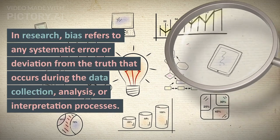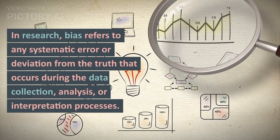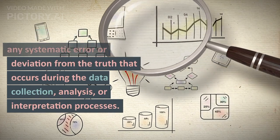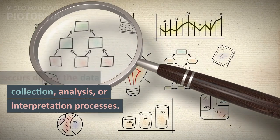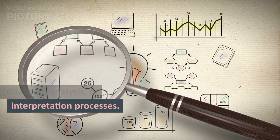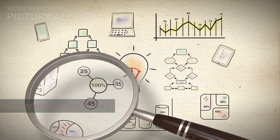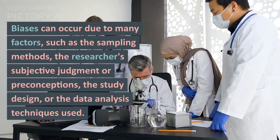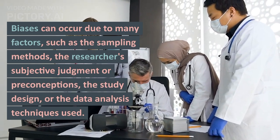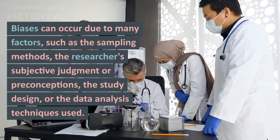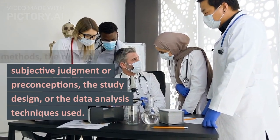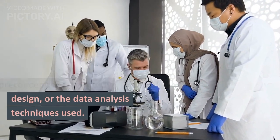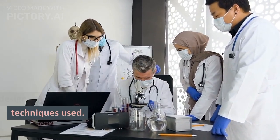In research, bias refers to any systematic error or deviation from the truth that occurs during the data collection, analysis, or interpretation processes. Biases can occur due to many factors, such as the sampling methods, the researcher's subjective judgment or preconceptions, the study design, or the data analysis techniques used.